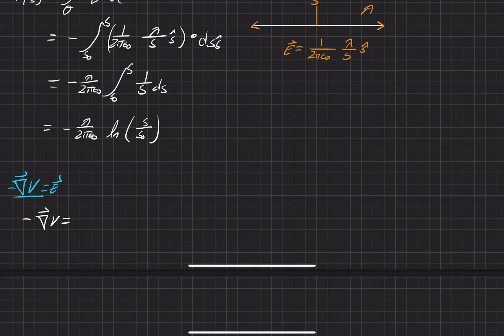So the way we do that is we take the negative gradient of the potential and that is going to be equal to our electric field. And the way we start right now is the negative gradient of V in cylindrical coordinates. And that's going to be equal to this right here.